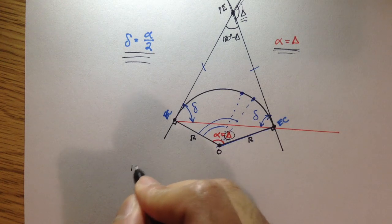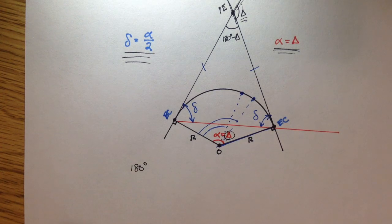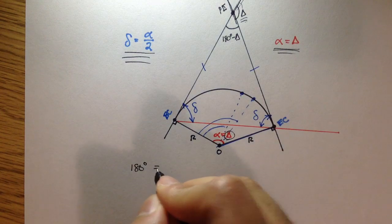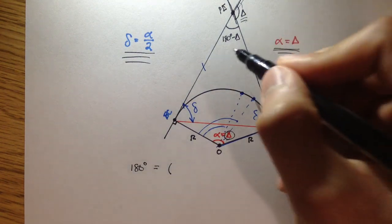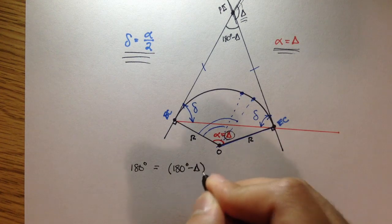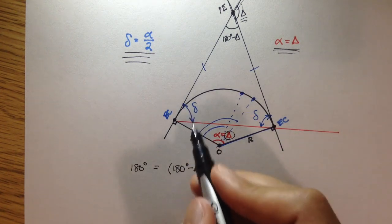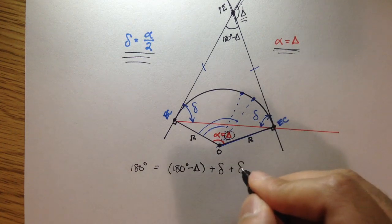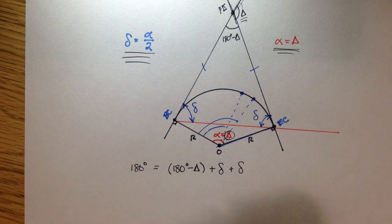So, if I said 180 degrees, that's the sum of all the angles within a triangle is equal to, well, you have this 180 degrees minus delta, and then you have a small delta deflection angle here, and then you have another delta angle here.